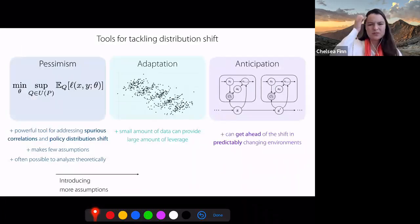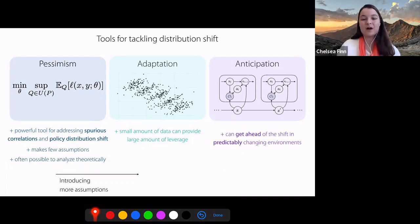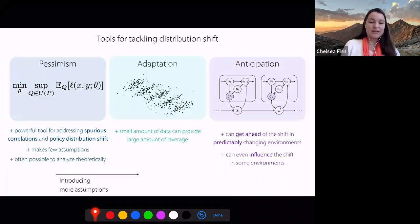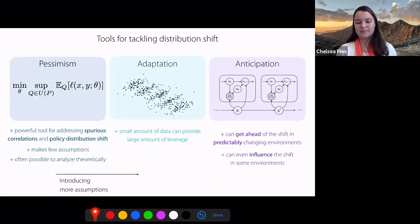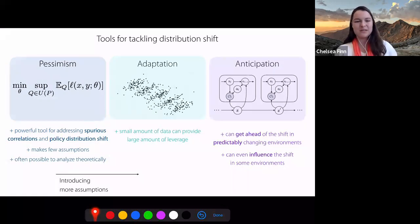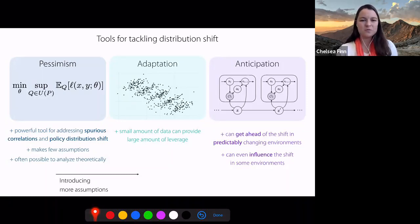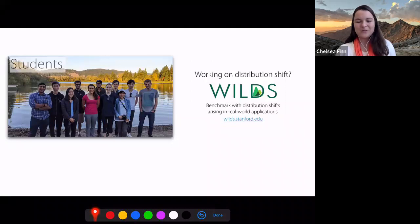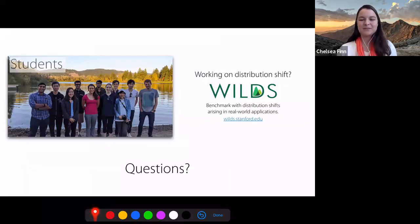In addition to just adapting to distribution shift, we can get ahead of the shift in environments that are changing in predictable ways, and in some cases we can actually influence the shift and use that to our advantage to become more performant. To summarize overall, I talked about three tools for tackling distribution shift: pessimism, adaptation, and anticipation. These are really useful and practical tools for trying to get a handle on these really challenging distribution shift problems.